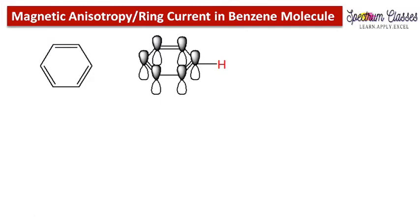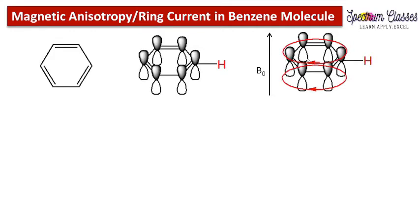When this molecule is placed in the applied external magnetic field, there is a circulation of electrons in the ring formed above and below the benzene ring. If electron circulation is present, then there is an induced current. This arrow shows the direction of the induced current.